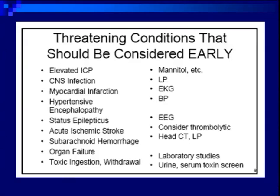Some things to think about early: Do they have reason for elevated intracranial pressure — a suspected bleed or tumor? Do they have signs or symptoms of CNS infection? If so, they need urgent antibiotics and lumbar puncture once safe. Also consider myocardial infarction, hypertensive encephalopathy, status epilepticus, acute ischemic stroke, subarachnoid hemorrhage, organ failure (liver, kidney, heart failure, pulmonary failure), toxic ingestions, and withdrawal. If we didn't have alcohol withdrawal, I think we'd have a third as many patients admitted. These early considerations will direct your next diagnostic tests and therapies.